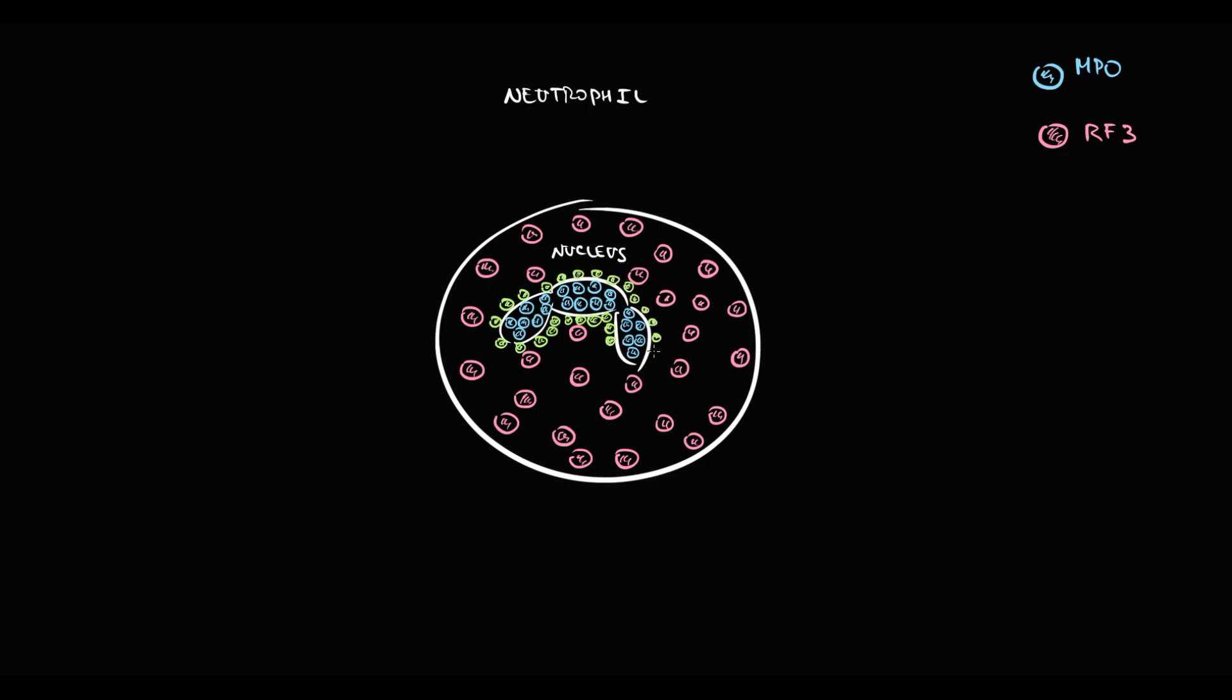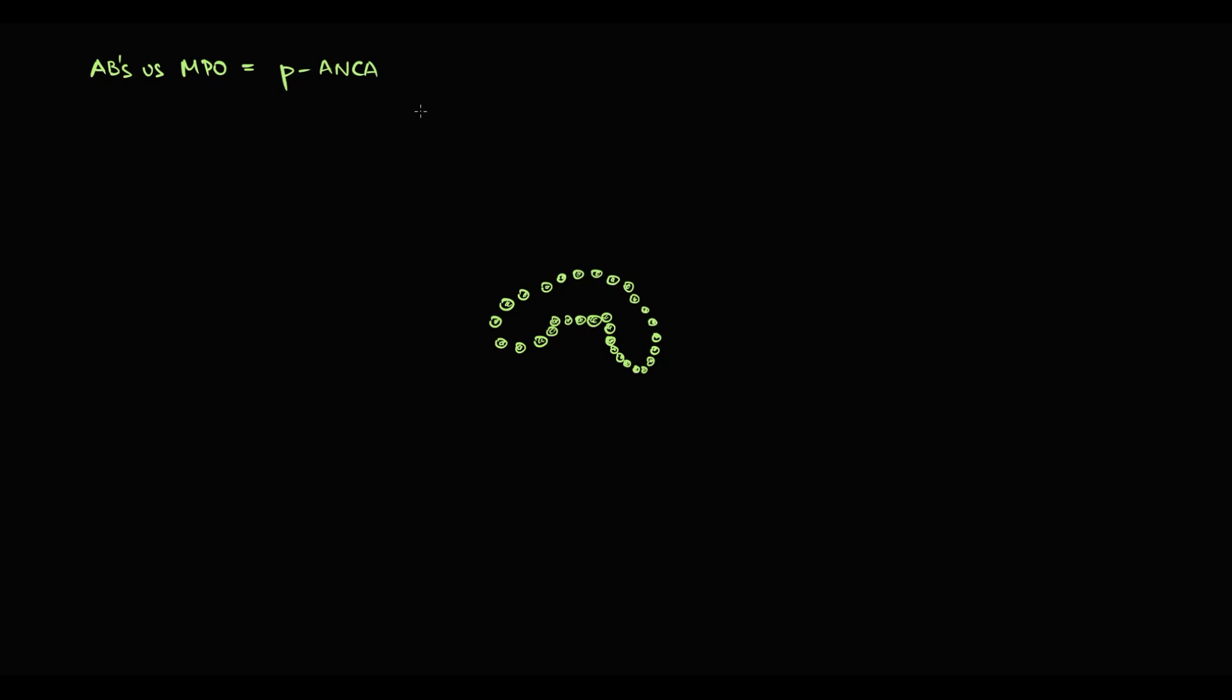Here we have a neutrophil. Inside the neutrophil, we have a segmented nucleus. The nucleus contains massive amounts of myeloperoxidase. And in the cytoplasm, neutrophil has another enzyme called PR3. So now let's suppose that the patient has autoantibodies against myeloperoxidase. Myeloperoxidase is located inside the nucleus, so these antibodies will bind to the nucleus. And antineutrophilic antibodies which are located in the perinuclear region, we call P-ANCA. Such antibodies can be present in Churg-Strauss vasculitis or ulcerative colitis.